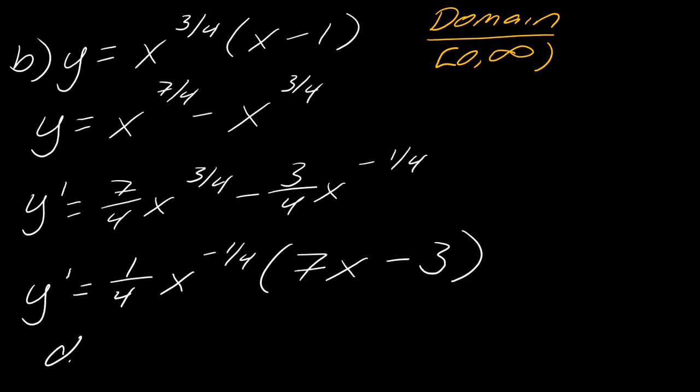And so then you have, once again, so it does not exist at X equals 0, which, okay, fine. I mean, that wasn't in the domain. And then you have, this is 0 at X equals 3 over 7. And so then you can kind of just go forward with this with whatever else you need.